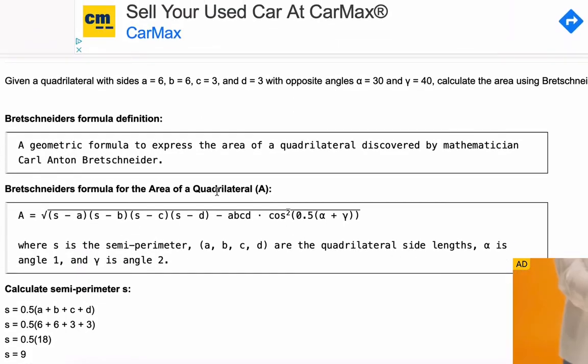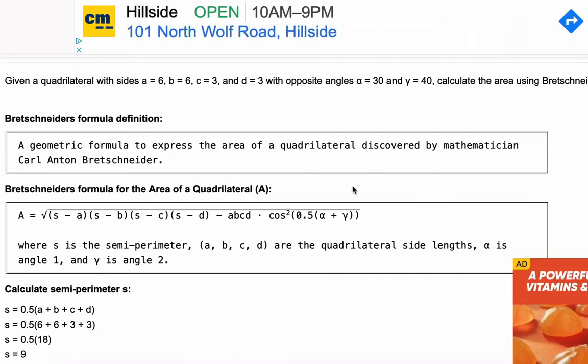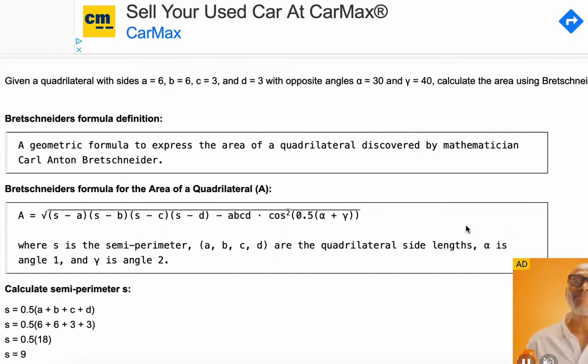So step one is, let's just talk about Bretschneider's formula. It's a geometric formula to express the area of a quadrilateral, and it gets its name from mathematician Carl Bretschneider.